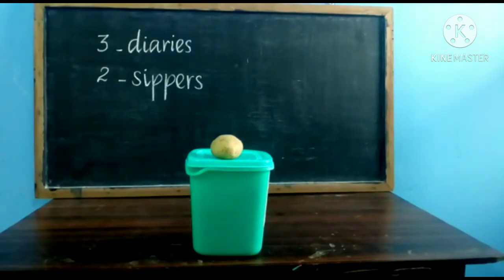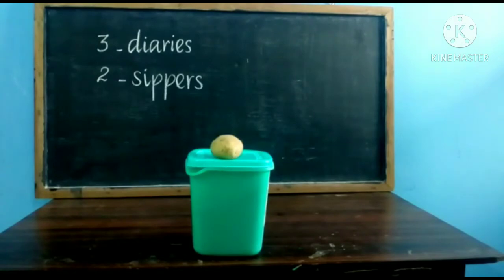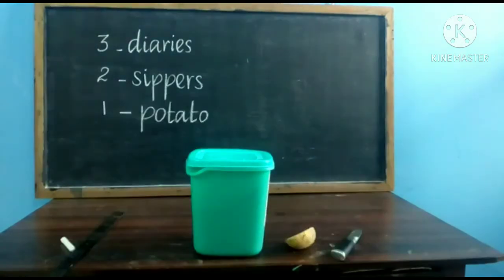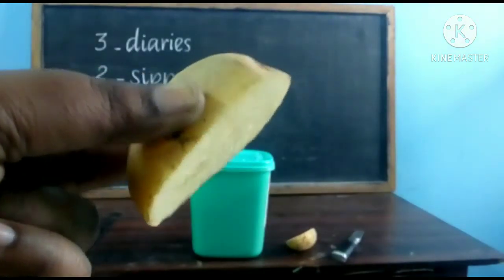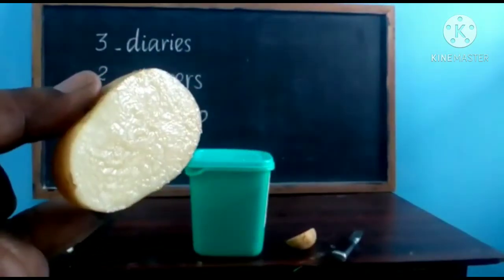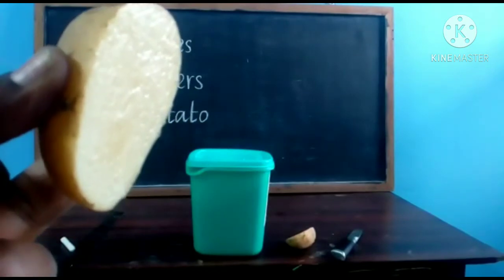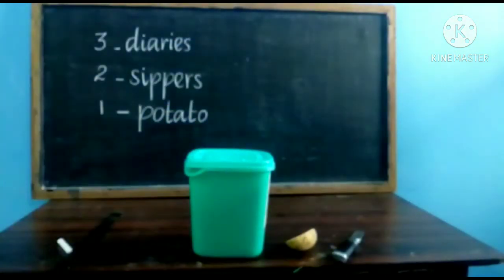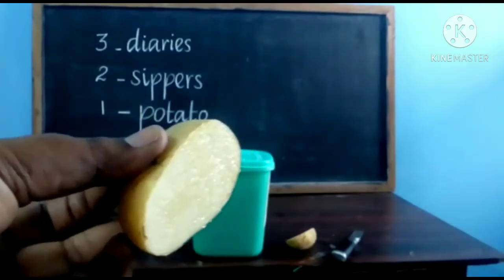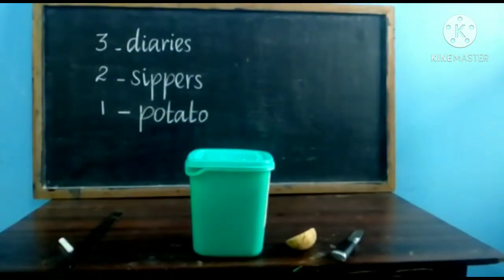Now, above the box there is a potato. How many potatoes are there? Yes, there is 1 potato. I cut down the potato into 2 equal pieces. Can you write the number for this piece? We cannot, because it is not a whole object. This piece is not a whole object, so we cannot write it as numbers.